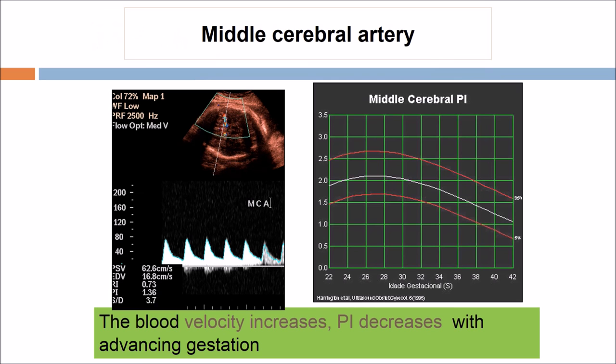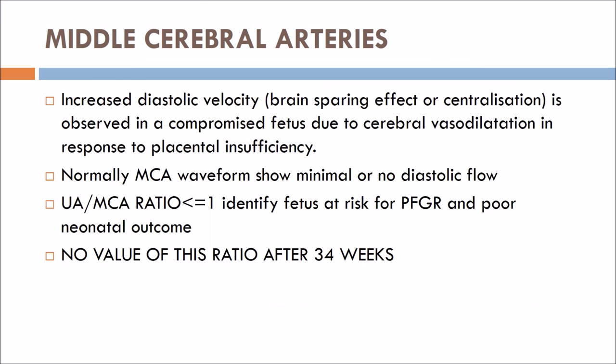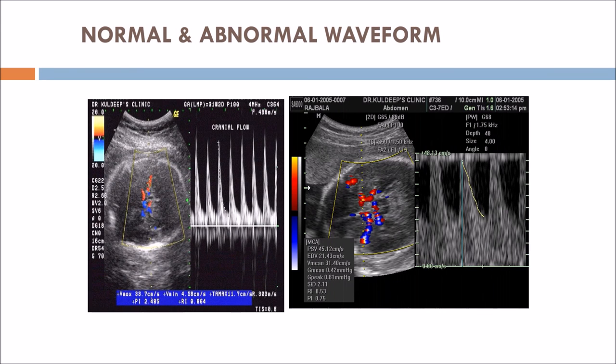For the middle cerebral artery, blood velocity increases and pulsatility index decreases with advancing gestation. Increased diastolic velocity — the brain-sparing effect or centralization — is observed in a compromised fetus due to cerebral vasodilation in response to placental insufficiency. Normal middle cerebral artery waveforms show minimal or no diastolic flow. An umbilical artery to middle cerebral artery ratio less than or equal to 1 identifies a fetus at risk for FGR and poor neonatal outcome. This ratio has no value if assessed after 34 weeks.